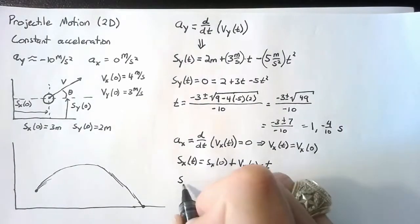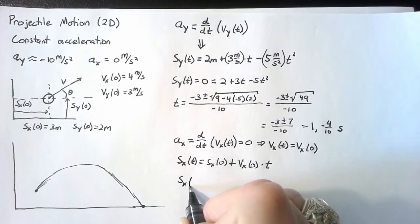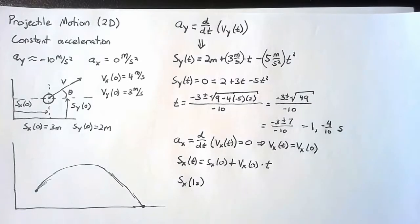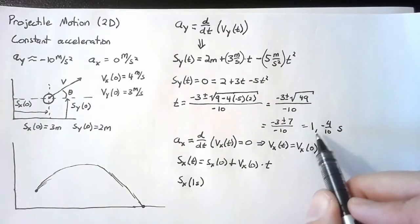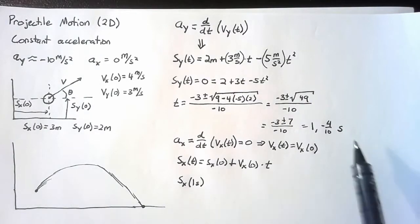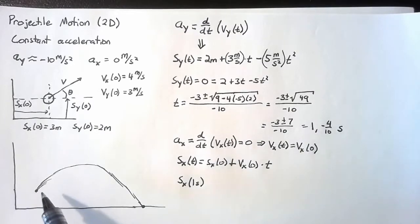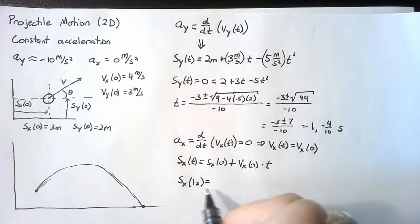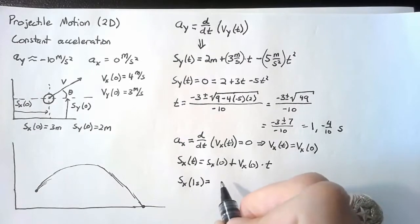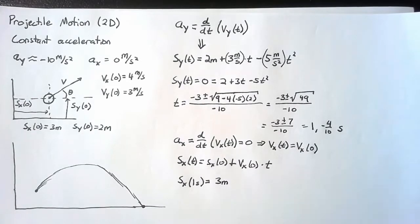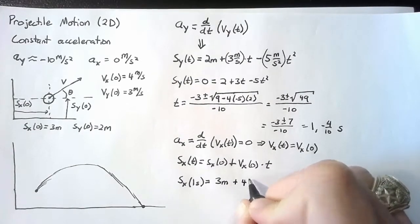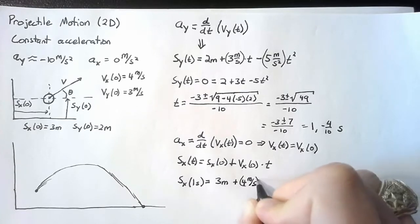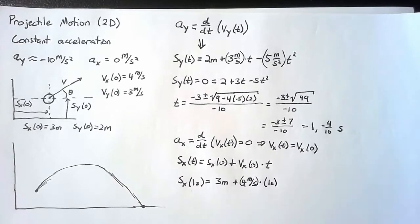So now we can plug in some numbers. s of x at time of one second. We know it's the one second because we're interested in going forward in time. We don't want to go backward in time from our initial point. So the position is going to be equal to our initial position, which was three meters plus our initial velocity, four meters per second multiplied by one second. So we end up with seven meters.